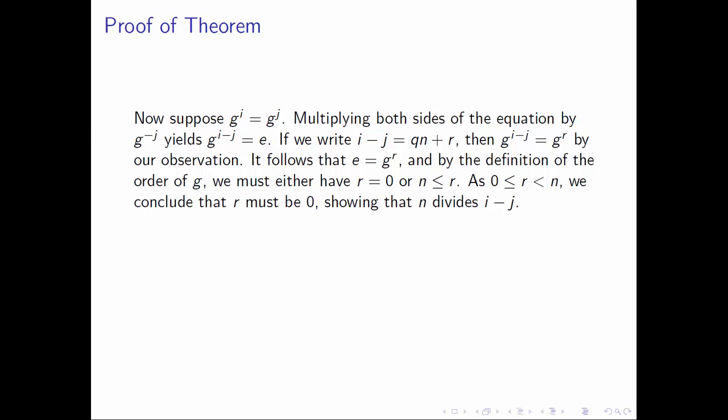Now for the converse. Assume gⁱ = gʲ, and we want to show that i − j is a multiple of n. Multiplying both sides on the right by g^(−j) and using rules of exponents, we conclude g^(i−j) equals the identity. Now applying the quotient remainder theorem, write i − j as qn + r where 0 ≤ r < n. By our earlier observation, g^(i−j) = g^r. Combined with g^(i−j) = e, we get that the identity equals g^r.